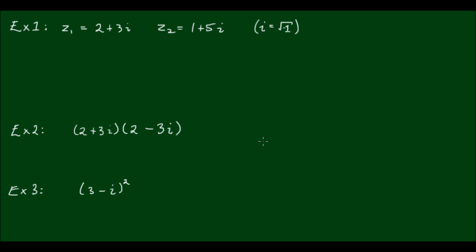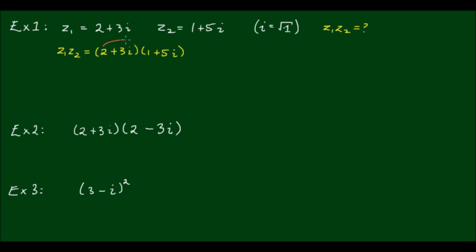In the first example, suppose I have one complex number z1 is equal to 2 plus 3i, and another z2 is equal to 1 plus 5i, and I want to find the product of z1 times z2. The multiplication of complex numbers follows the exact same process as the distributive law of algebra. So if I write z1 times z2 is equal to 2 plus 3i multiplied by 1 plus 5i, I would distribute this exactly the same way as I would with algebra.